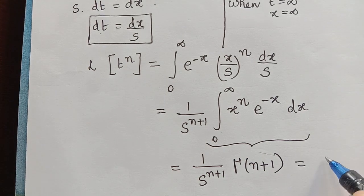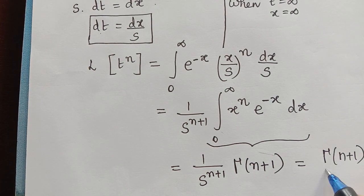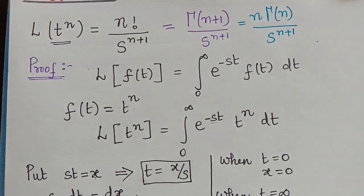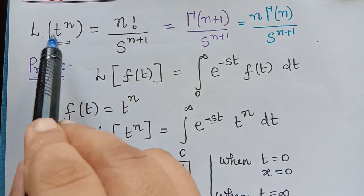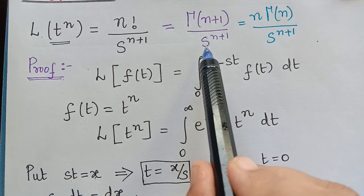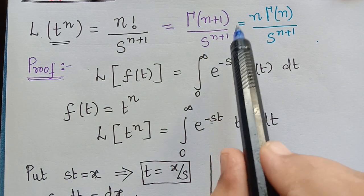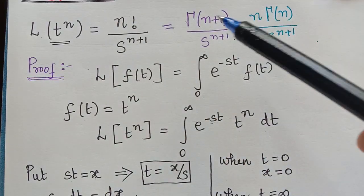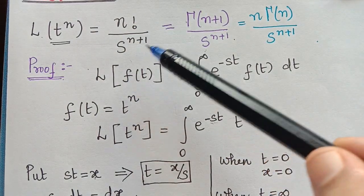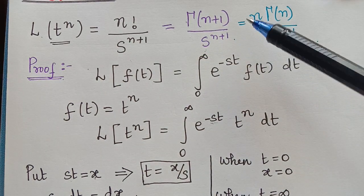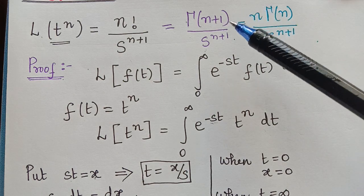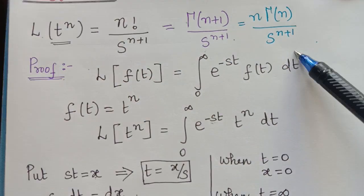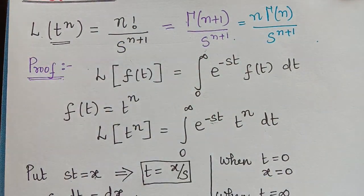Therefore we obtain the Laplace transform of t to the power n equal to gamma of n plus 1 divided by s to the power n plus 1, which is one of the results. Since gamma of n plus 1 equals n factorial, we can also write it as n factorial divided by s to the power n plus 1. Additionally, using the gamma function property gamma of n plus 1 equals n gamma n, we get n gamma n divided by s to the power n plus 1. So we have obtained all three representations.